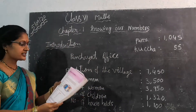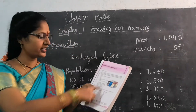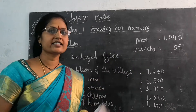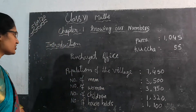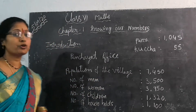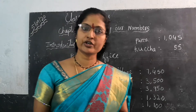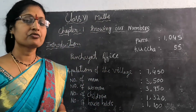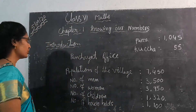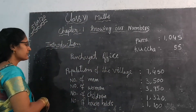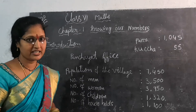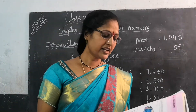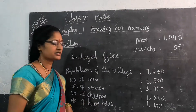Now in this lesson, if you look at the textbook, we will see this picture. Introduction of this picture — both two friends are there. They are going to the Panchayat office, and they will find different information there. Population of the village — they get different numbers.